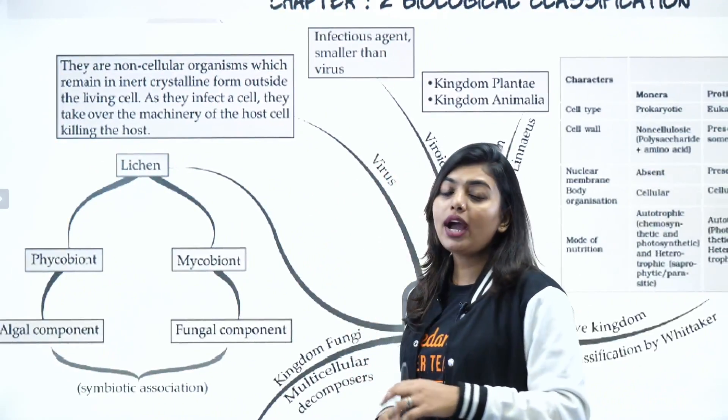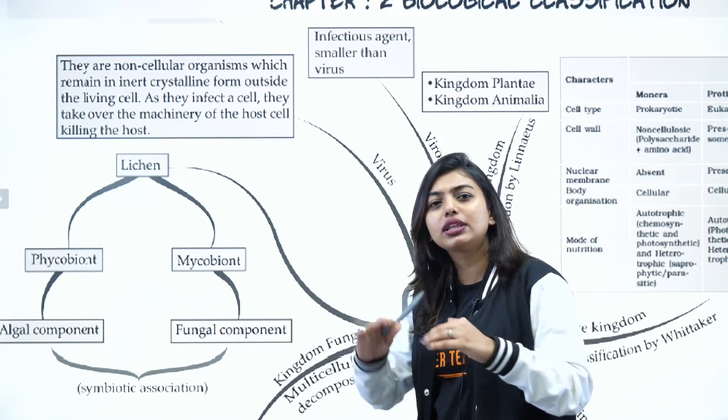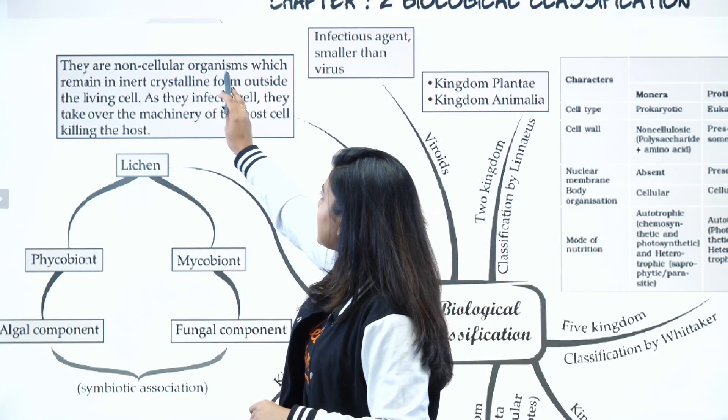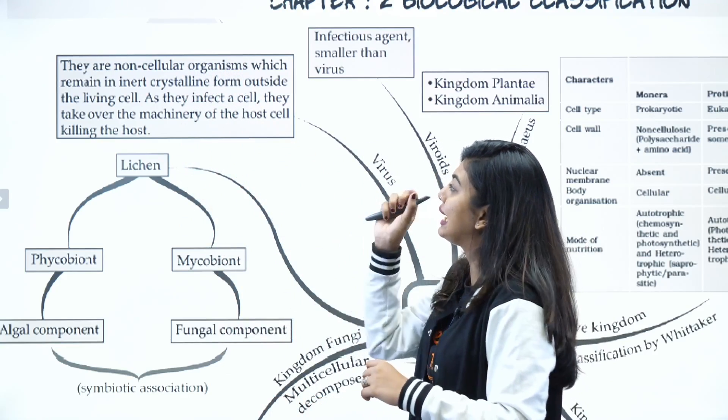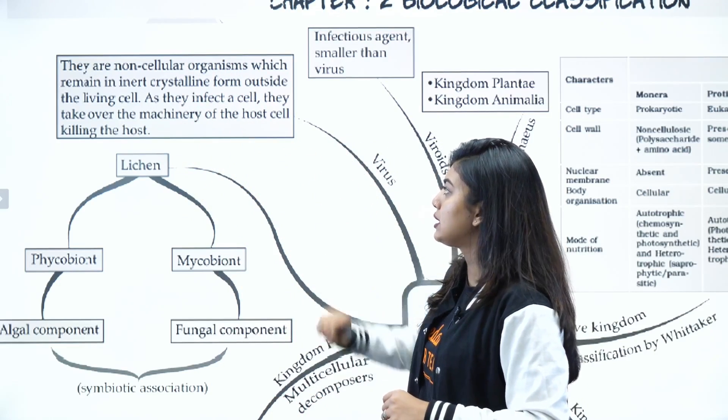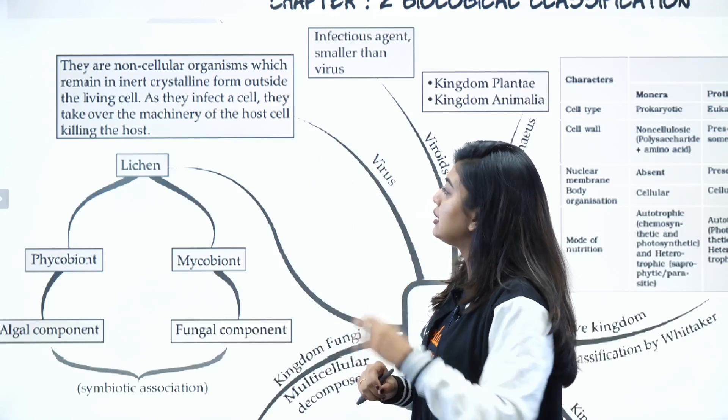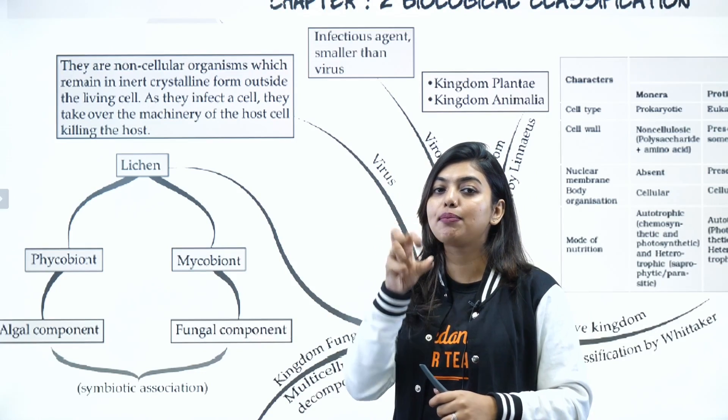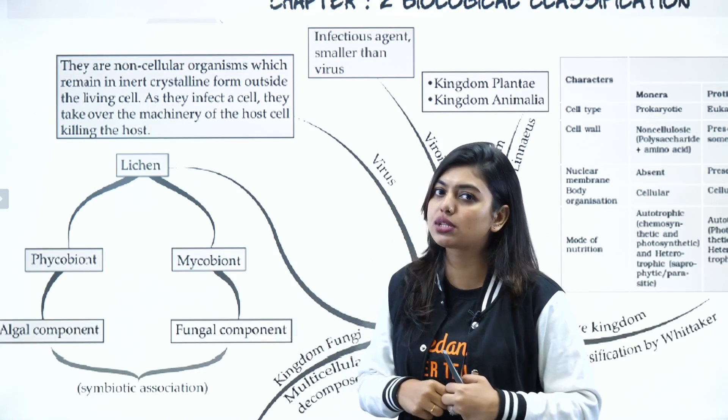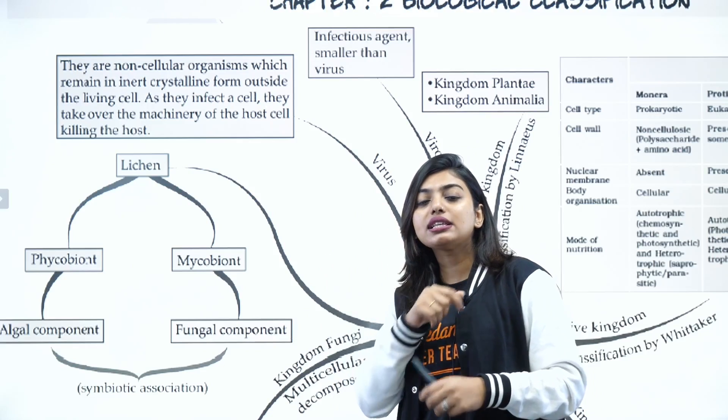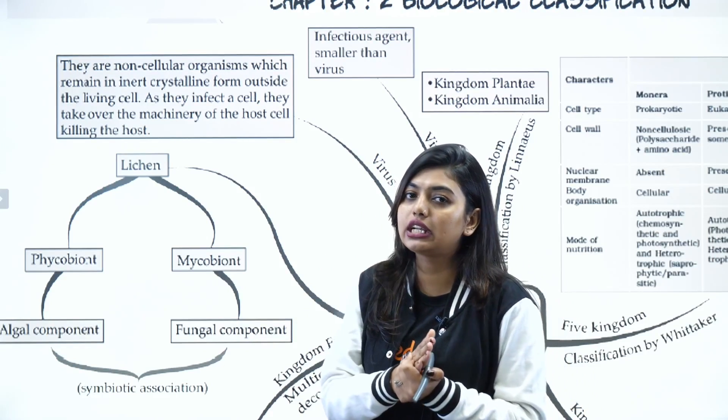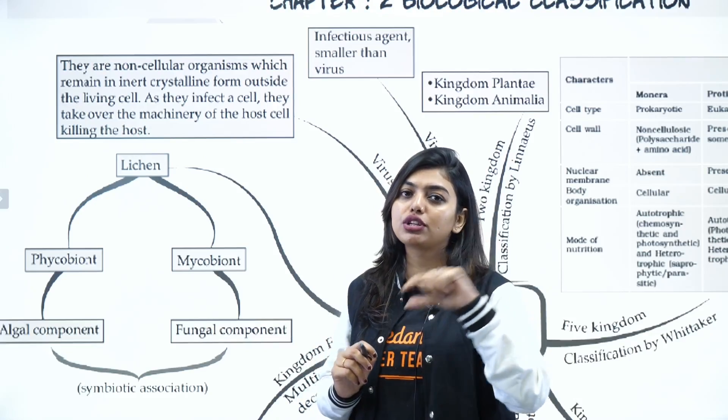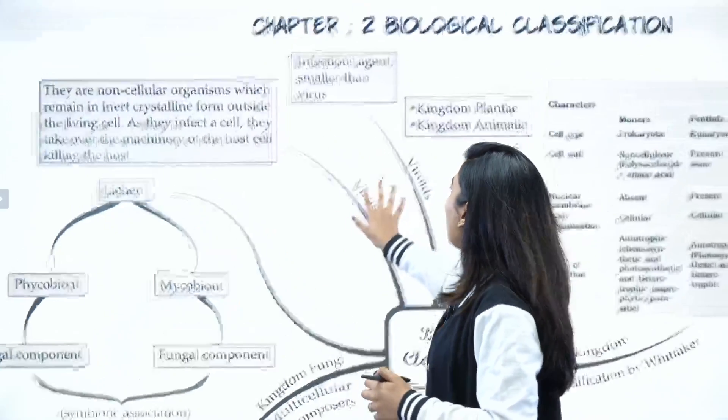Now here if you come, you have virus. Virus also could not be placed anywhere, so they are given a completely different class - most infectious people. They are non-cellular organization which remains inert, crystalline from outside the living cell. As they infect a cell, they take over the machinery of the host cell, killing the host. So the most important thing is their replication or their changing of the host machinery. Virus have a protein coat and a genetic material, and this protein coat has capsules or capsomeres - it is made up of smaller units called capsomeres.